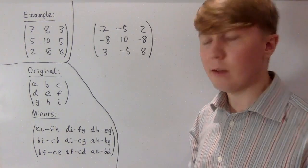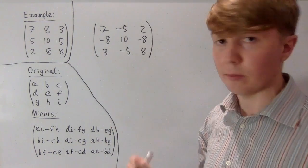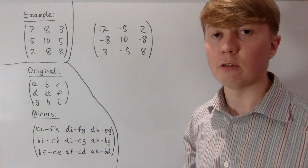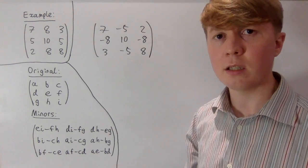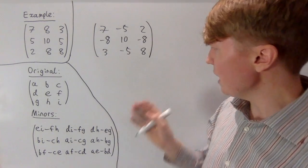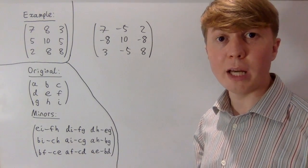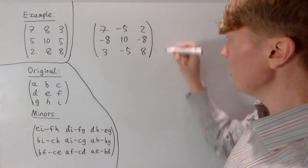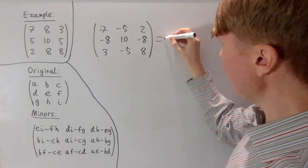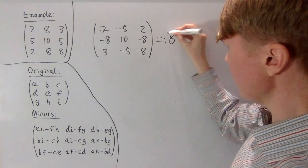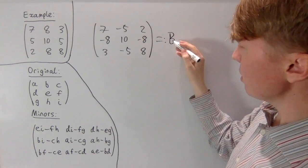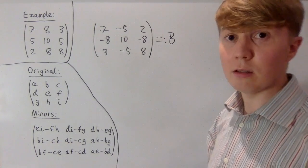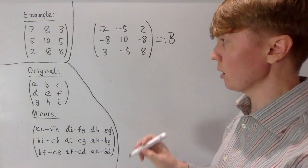The next thing we would do to find the inverse of our original matrix is divide by the determinant of the original matrix. Unfortunately, we don't know what the determinant of the original matrix was. However, we can still work this out. Let's call our adjugate matrix B, and think about how the determinant of B is going to be related to the determinant of our original matrix.